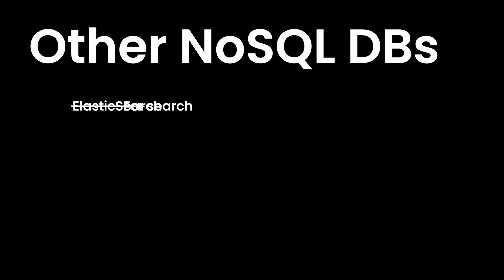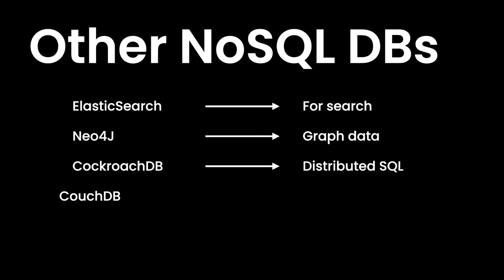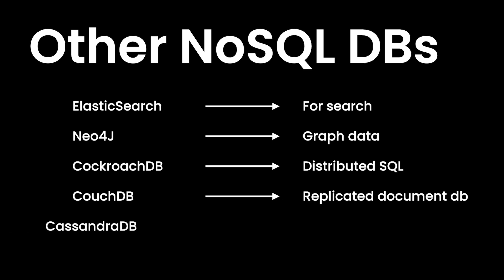As you can see, there isn't an SQL standard on one hand and a NoSQL standard on the other. The NoSQL group is a catch-all that contains very different solutions and use cases. It's also worth mentioning Elasticsearch, which is search-oriented, Neo4J, which is graph-oriented, or CockroachDB, CouchDB, and Cassandra, each of which is optimized for a specific use case.